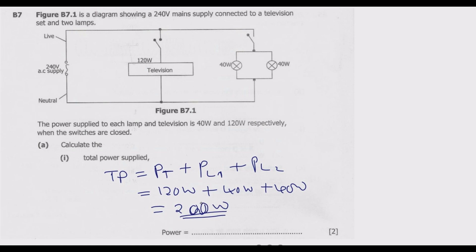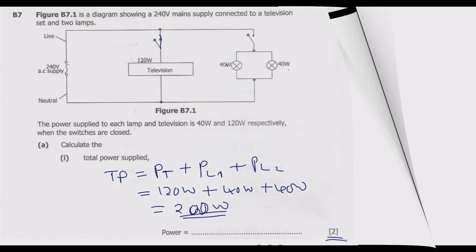So 200 watts is the total power supplied when the switches are closed. When you close the switches, the total power supplied will be equal to the summation of these individual powers. Once you do that, you get those two marks for question A.